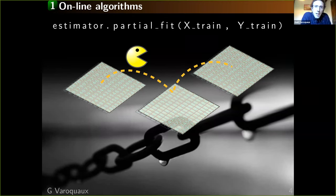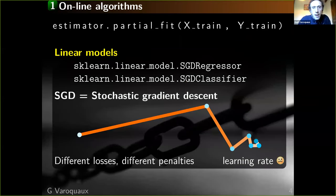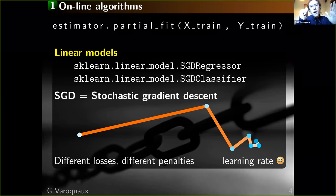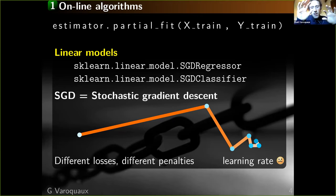If you do deep learning, you do this, but you can do this outside of deep learning. The way it works is that some of our algorithms have a partial fit. The idea of partial fit is that you give the algorithm chunks of data — the algorithm processes chunks and chunks. In deep learning as well as in our linear models, the core algorithm behind all this is stochastic gradient descent.